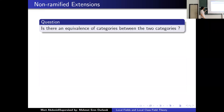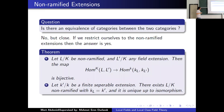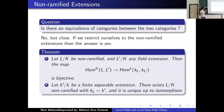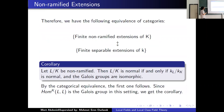One might ask if there is an equivalence of categories between these two categories. If we restrict ourselves to unramified extensions, the answer is yes, as given by this theorem. The theorem says that the above map is actually a bijection when we consider unramified extensions, and that for every finite separable extension of residue fields, there exists a unique corresponding unramified extension. So there is an equivalence of categories between finite unramified extensions of K and finite separable extensions of the residue field K. As a corollary, L over K is normal if and only if the residue field extension is normal, so their Galois groups are isomorphic.